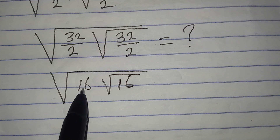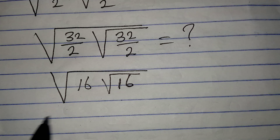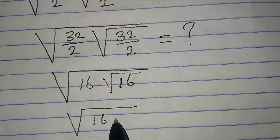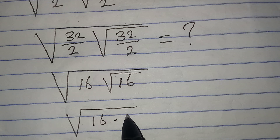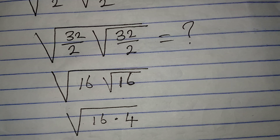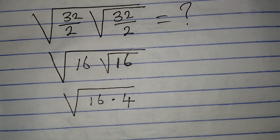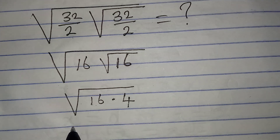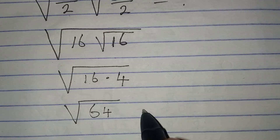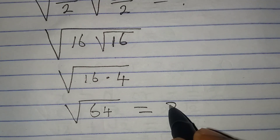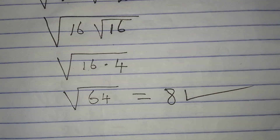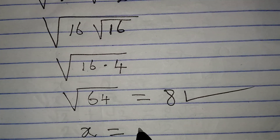Starting from the inner term: the square root of 16 is 4. Then I multiply 4 by 16, giving square root of 64. The square root of 64 is equal to 8, which matches what is given in the equation. Therefore we are correct to say that x equals 32.